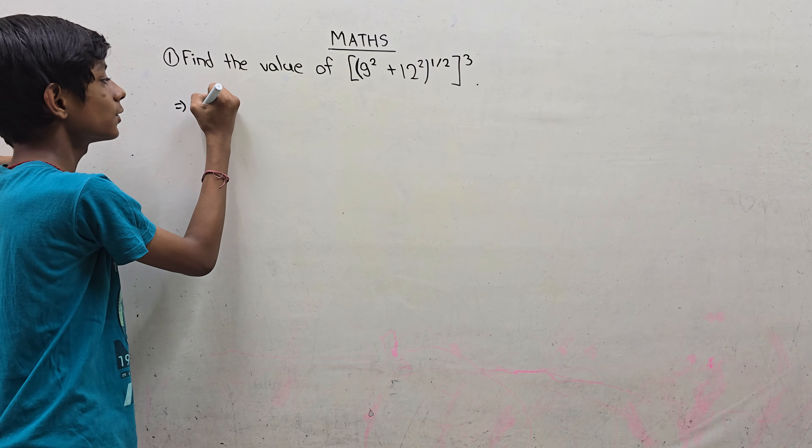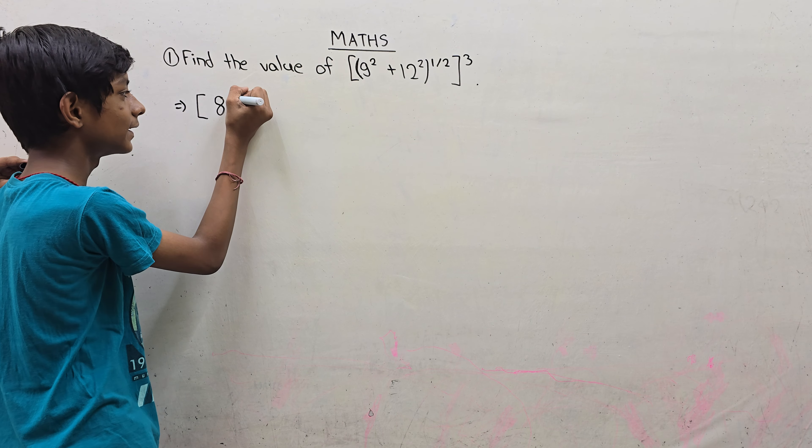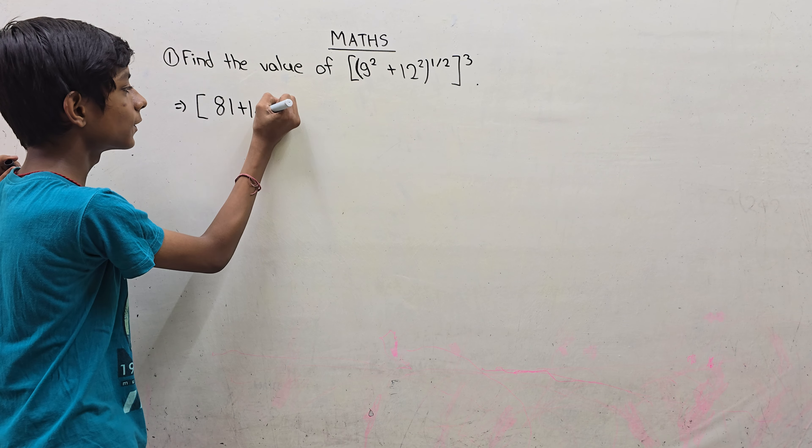So we will write the solution. First we will write the value of 9 square, which is 81 plus 144.